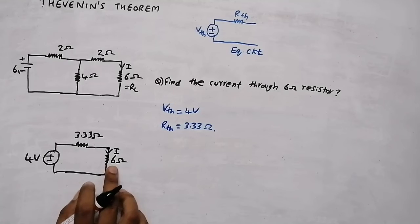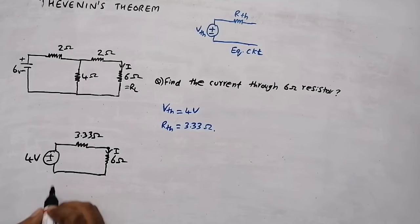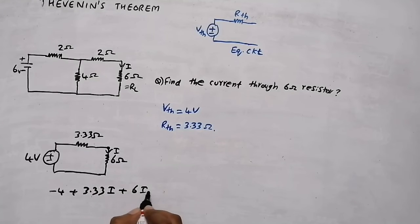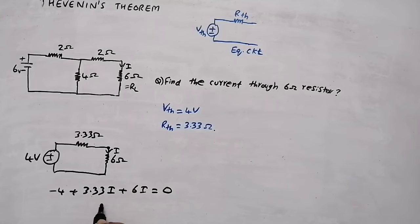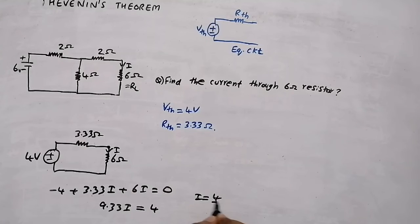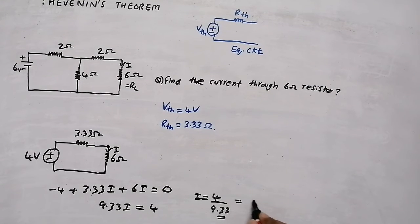We can do mesh analysis to find the current: −4 + 3.33I + 6I = 0. So (3.33 + 6)I = 4, which gives 9.33I = 4. Therefore I = 4 / 9.33 = 0.428 A.